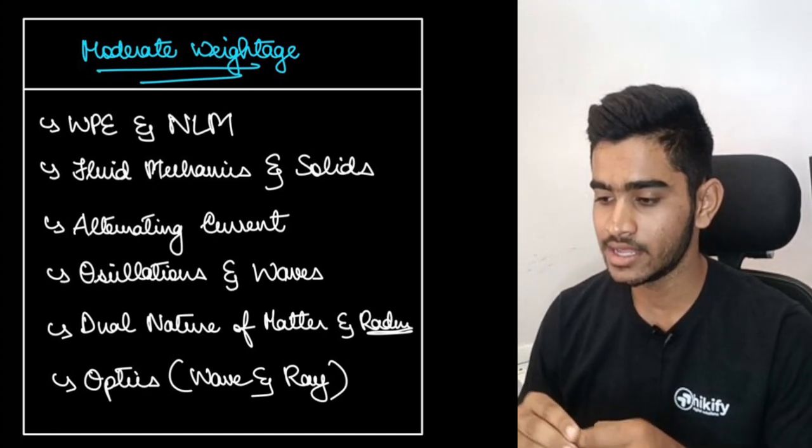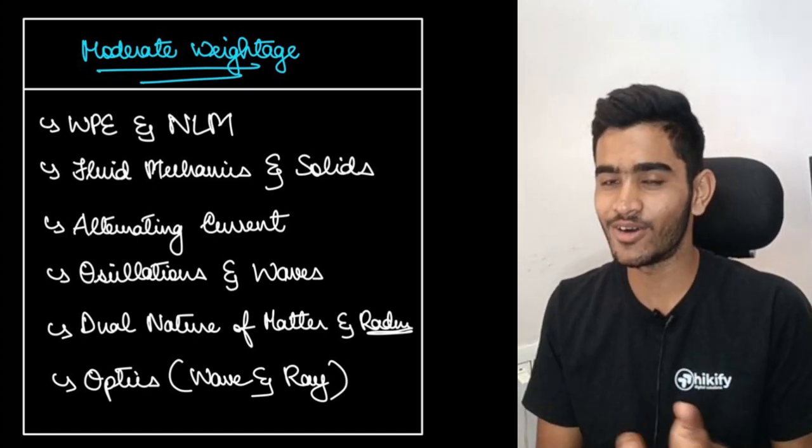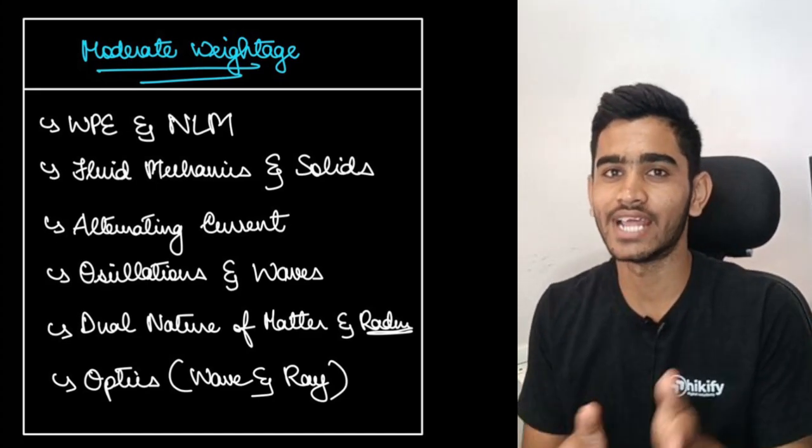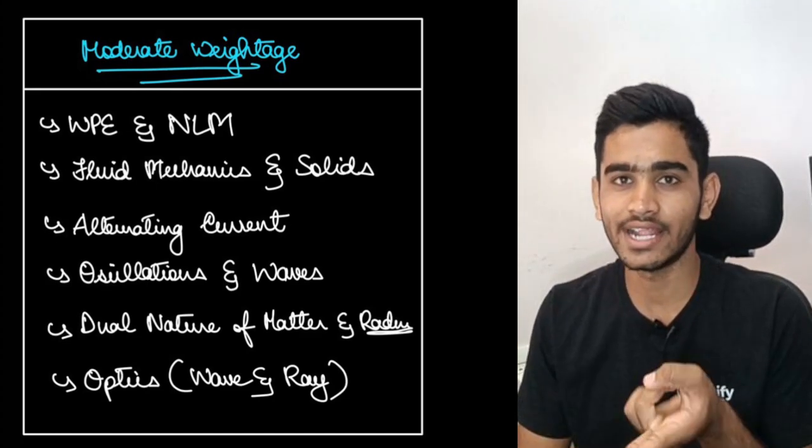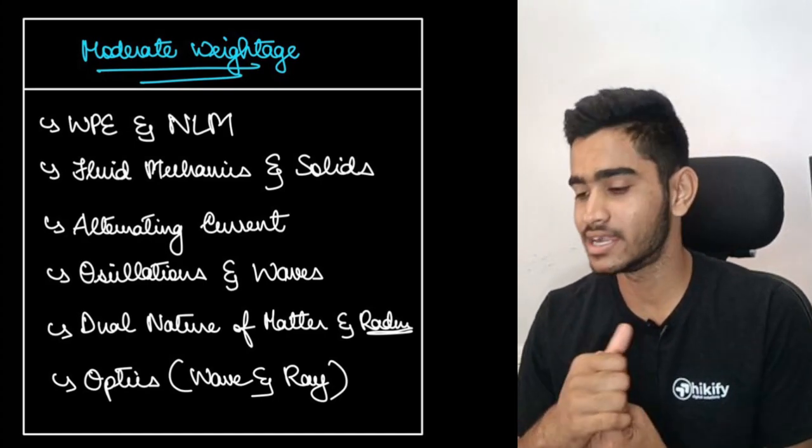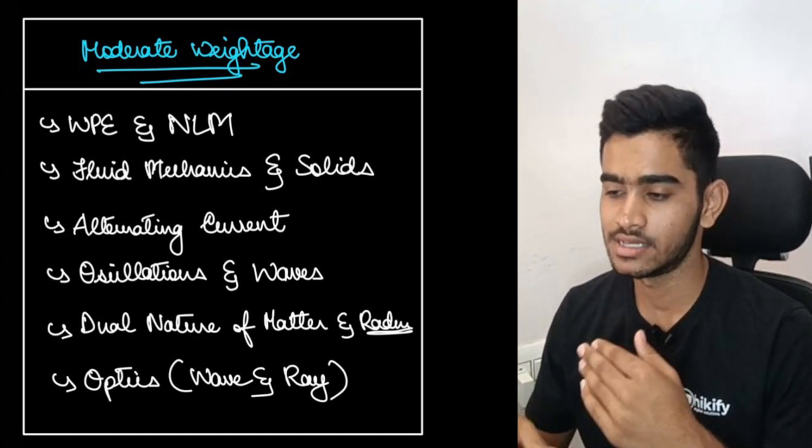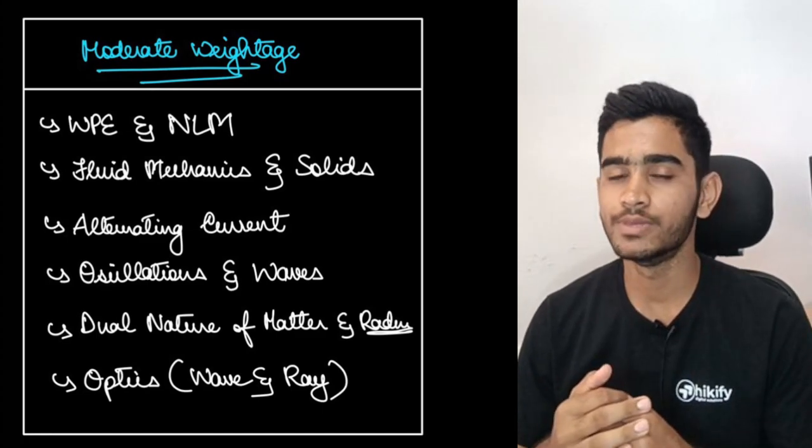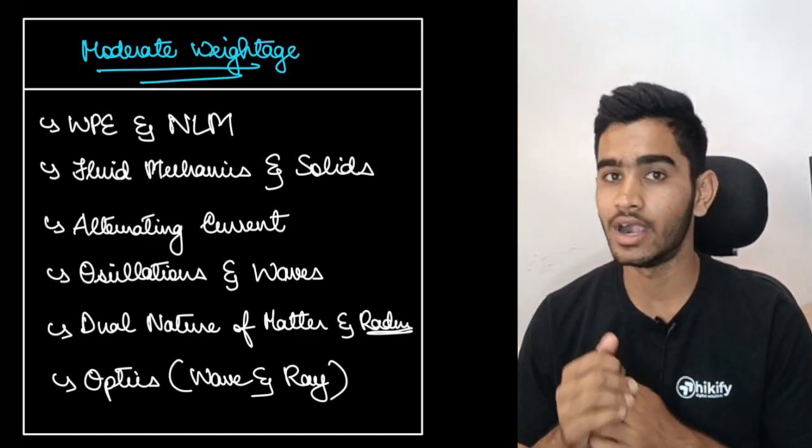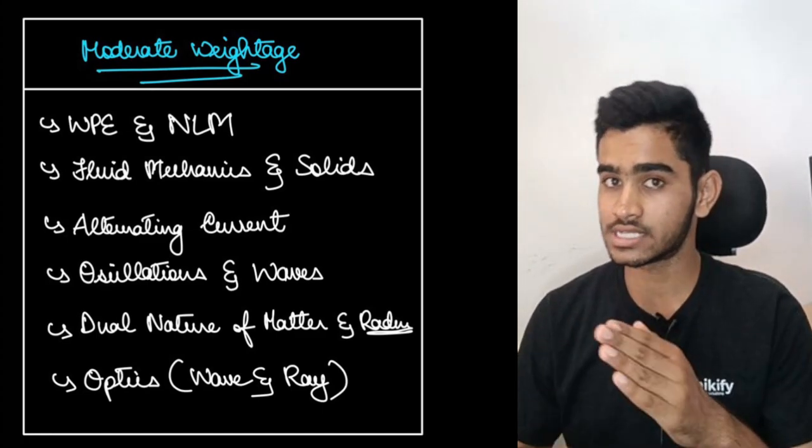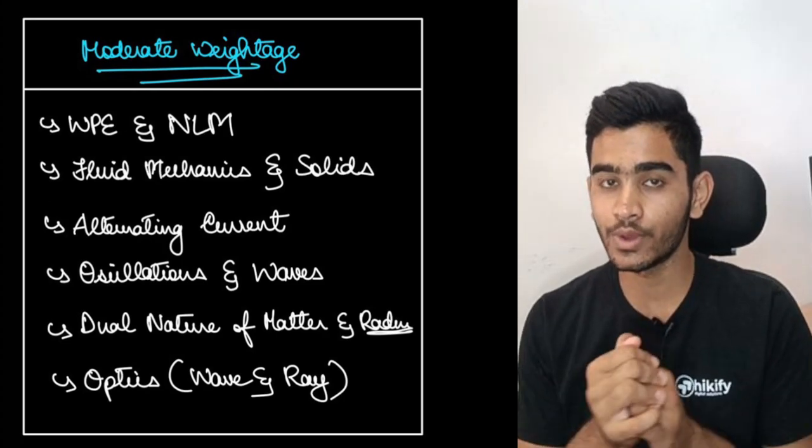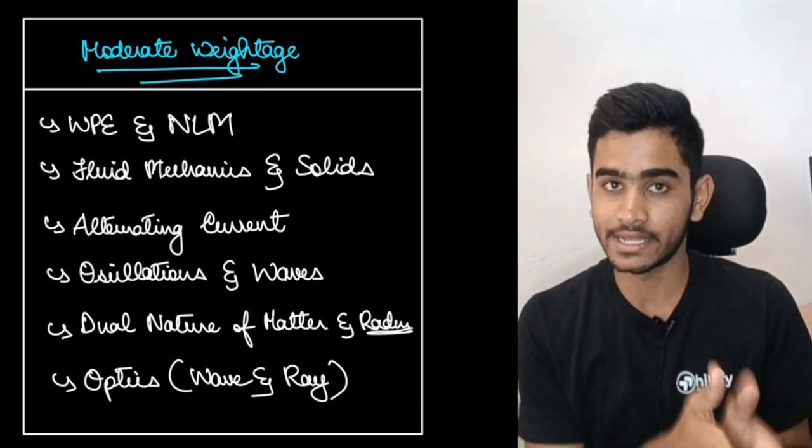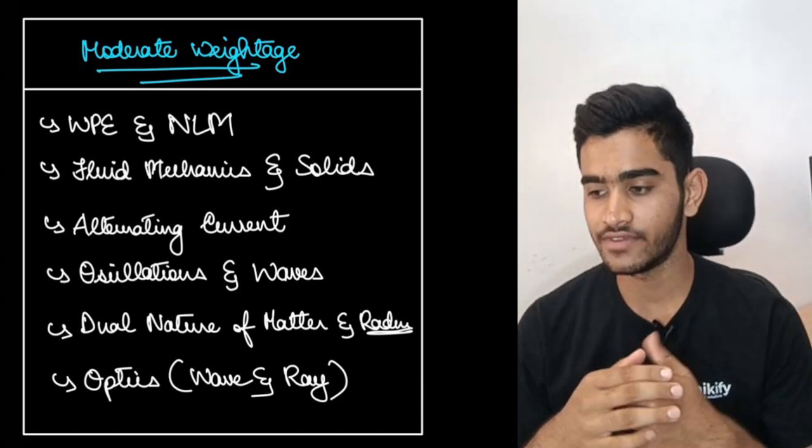AC is again the continuation of your ongoing series of that electrostatics, electrodynamics or current electricity and then magnetism and alternating current is again a new arena wherein you will be studying about the properties of alternating current. And to understand alternating current better you should be knowing direct current concepts better.